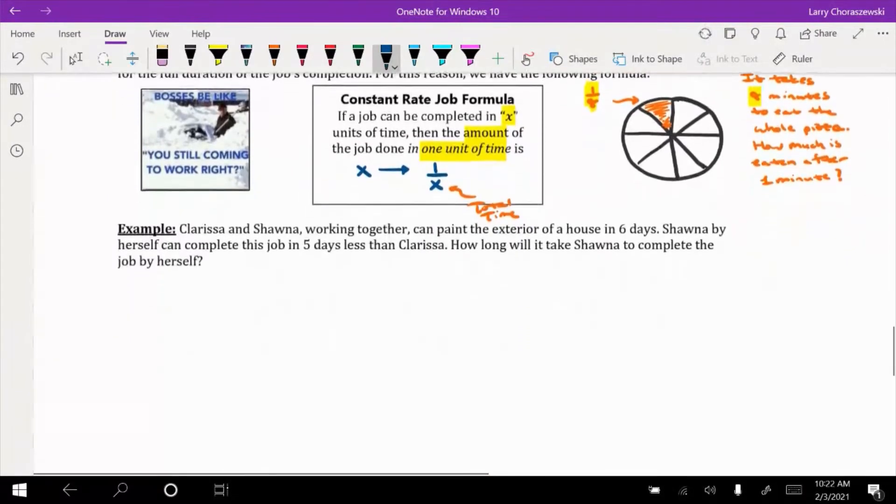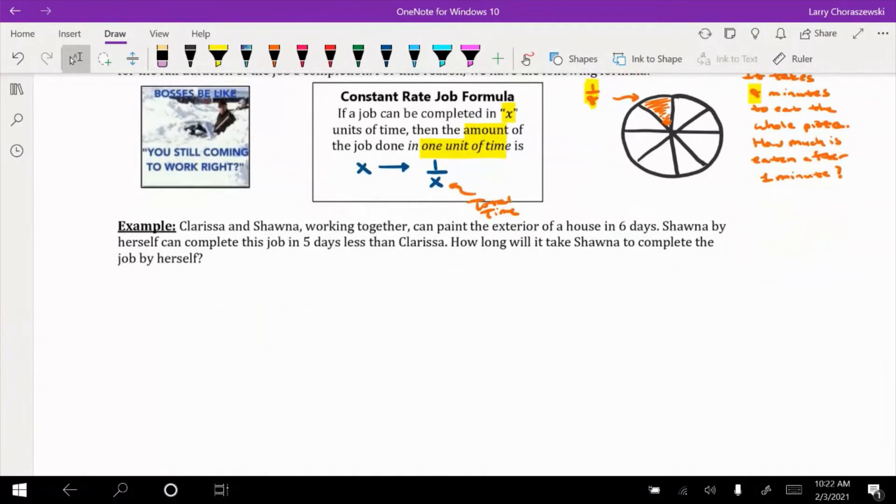So that takes us to our last example. Clarissa and Shawna working together can paint the exterior of a house in six days. So that's the job, painting the exterior of a house. Shawna by herself can complete this job in five days less than Clarissa. How long will it take Shawna to complete the job by herself?